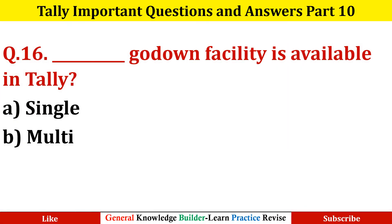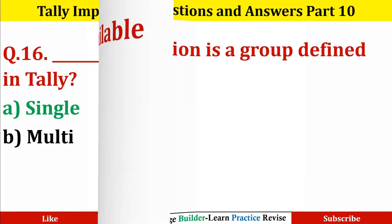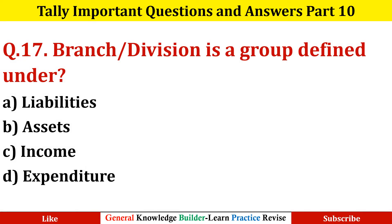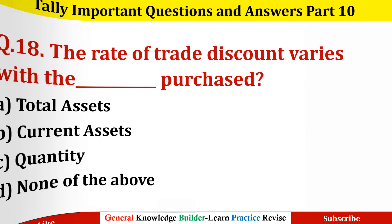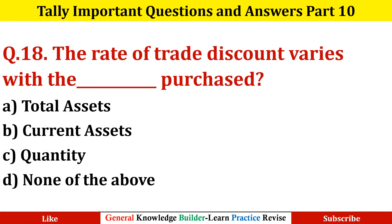Question number sixteen: Go-Down facility is available in Tally? Option A: Single Go-Down facility is available in Tally. Question number seventeen: Branch or Division is a group defined under? Option A: Liabilities. Question number eighteen: The rate of trade discount varies with? Option C: Quantity.